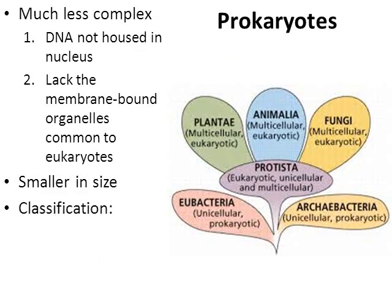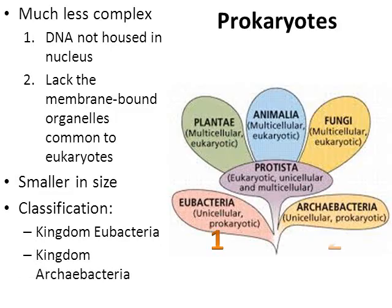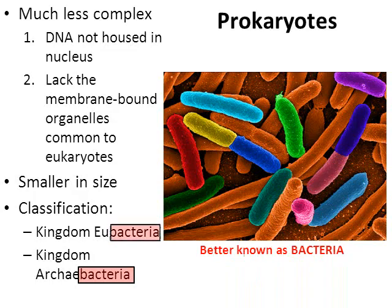When it comes to classification of prokaryotes, here we have our picture of the six kingdoms of life. One of them is labeled Kingdom Eubacteria and the other is labeled Kingdom Archibacteria — there's a little clue as to what types of organisms are prokaryotes. Prokaryotes are better known as bacteria, so whenever we hear the word bacteria, we are referring to prokaryotic cells.